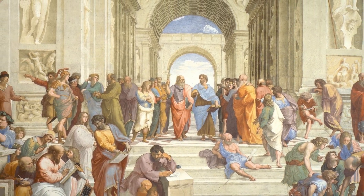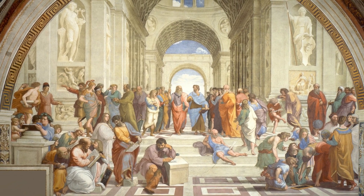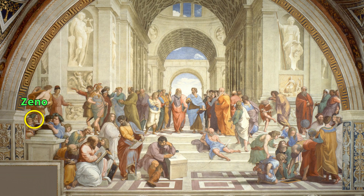On the far left we find Zeno of Citium, the founder of the school of Stoic philosophy, influencing thinkers such as Epictetus, Seneca and Marcus Aurelius. Next to him we find his direct opponent Epicurus, who was known for his ideas on materialism, hedonism, joy and happiness, contrasted to the philosophy of Zeno which focused more on discipline, virtue and living according to the inherent logic of the universe.